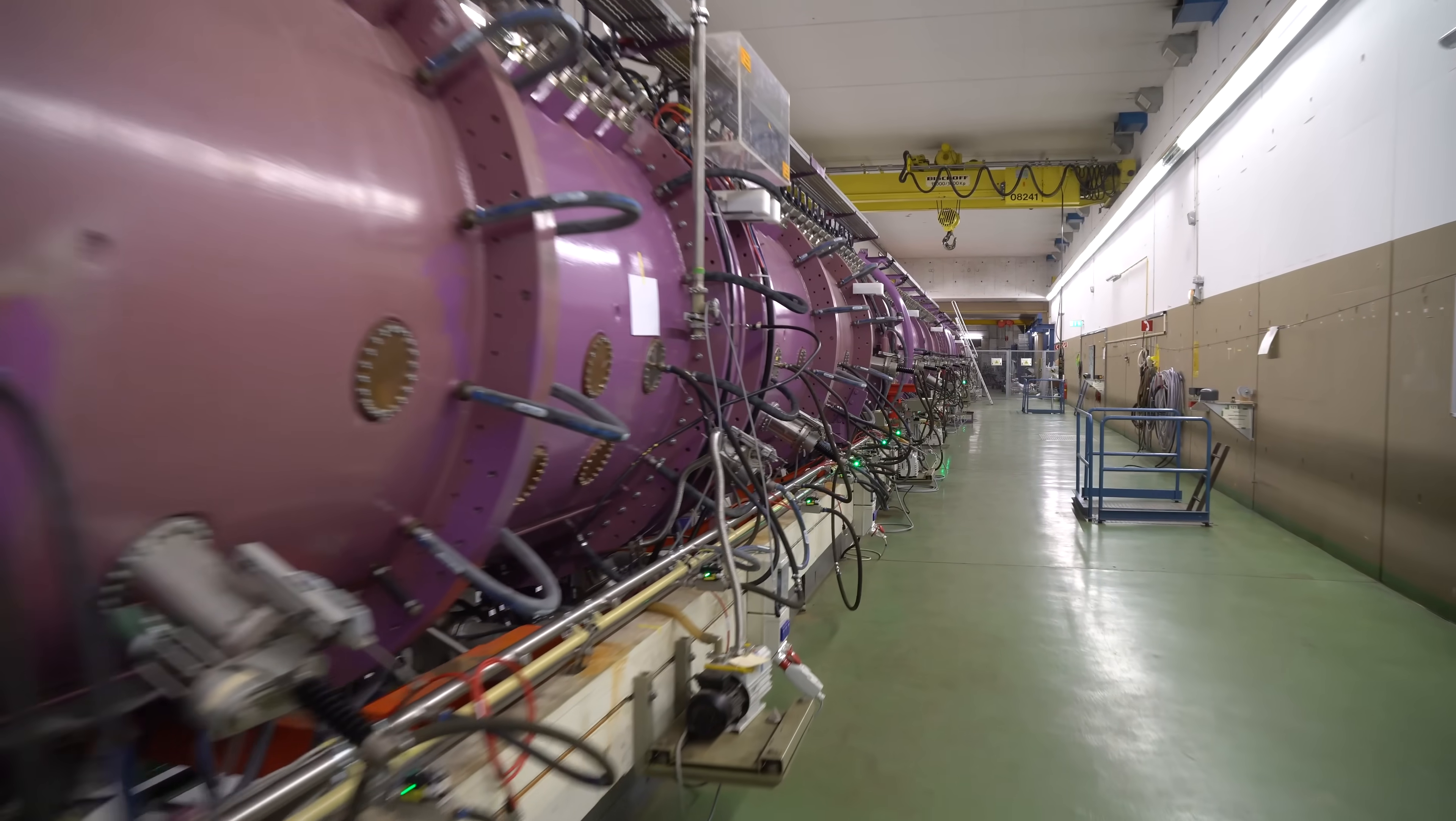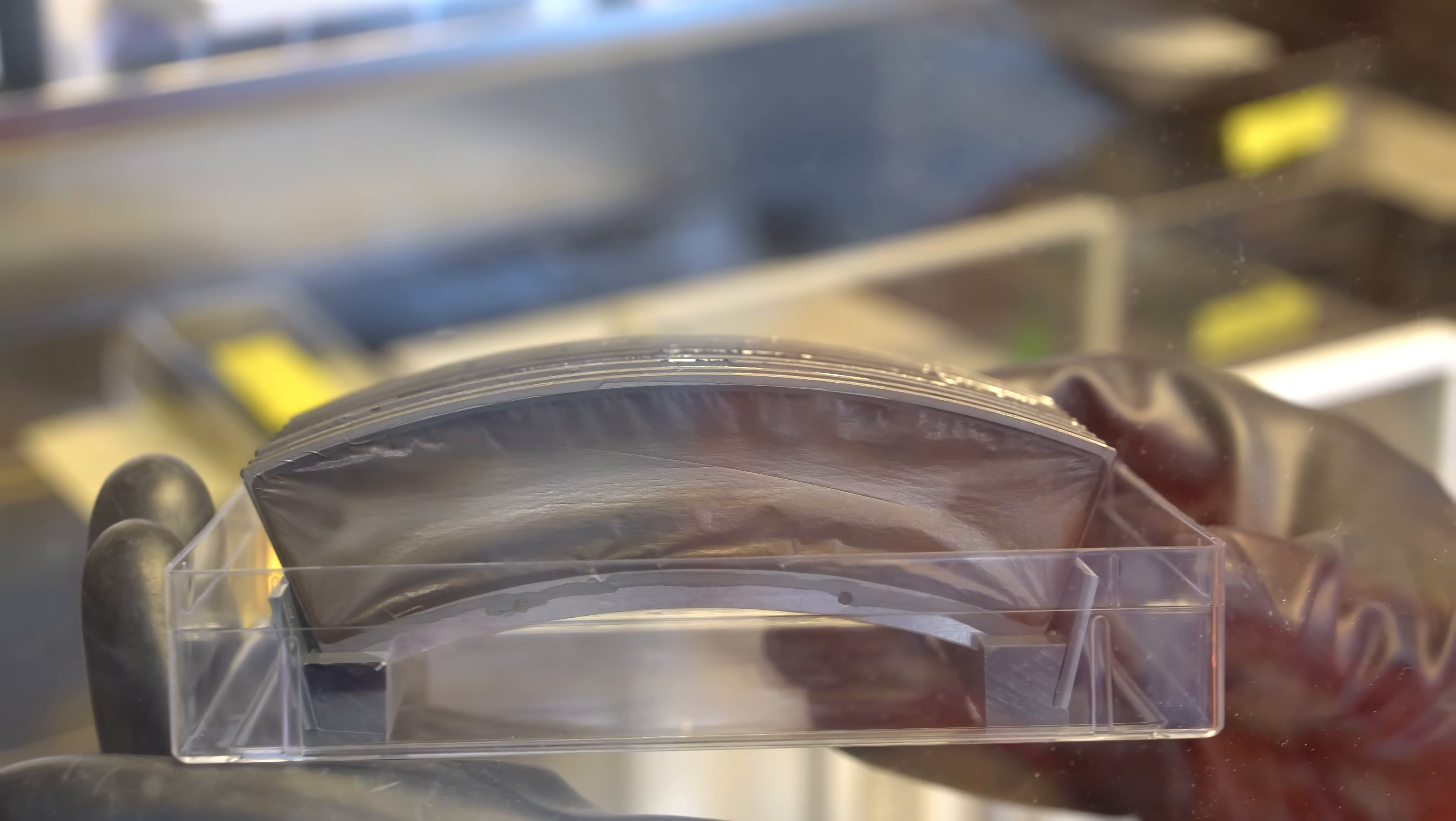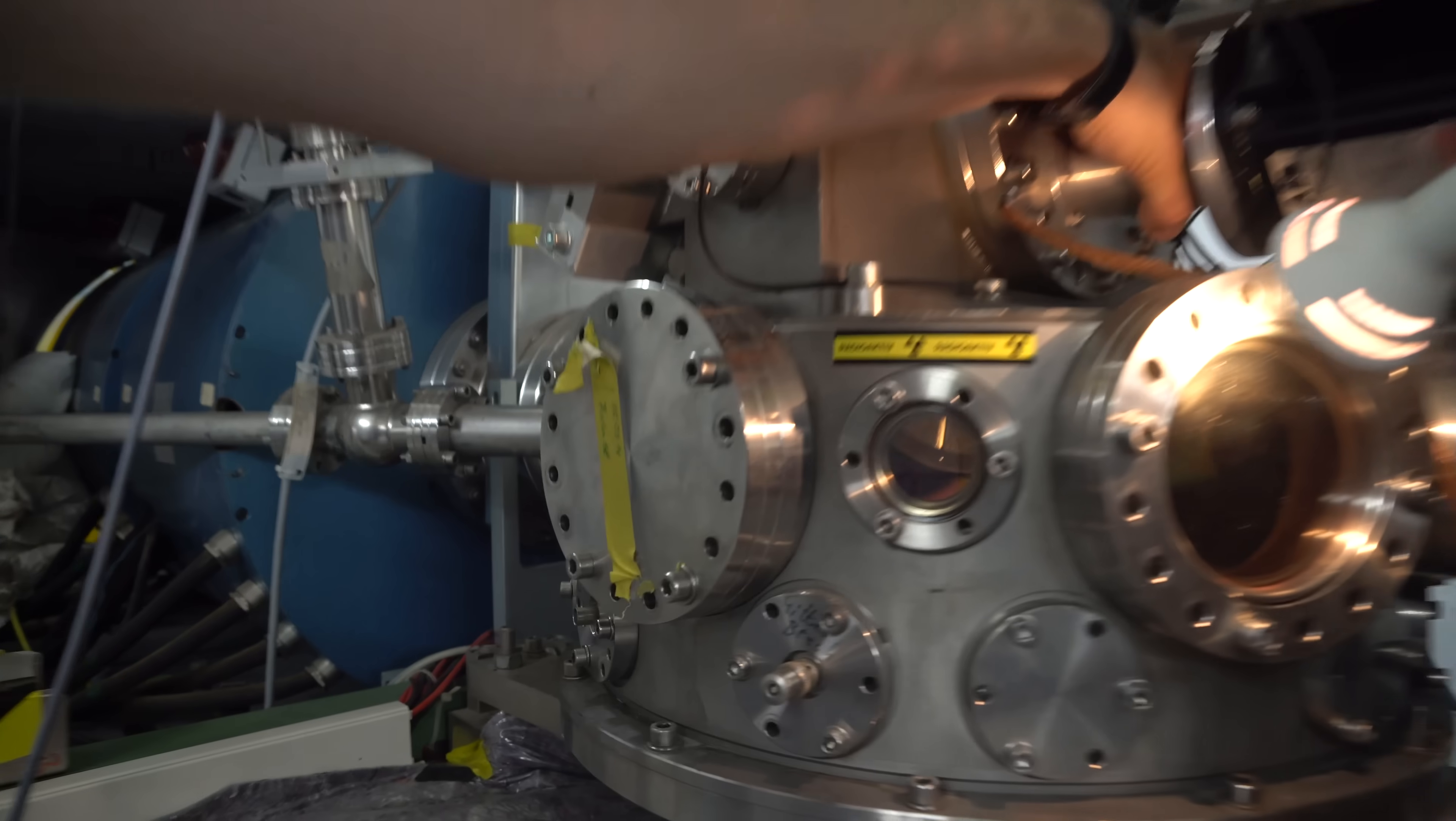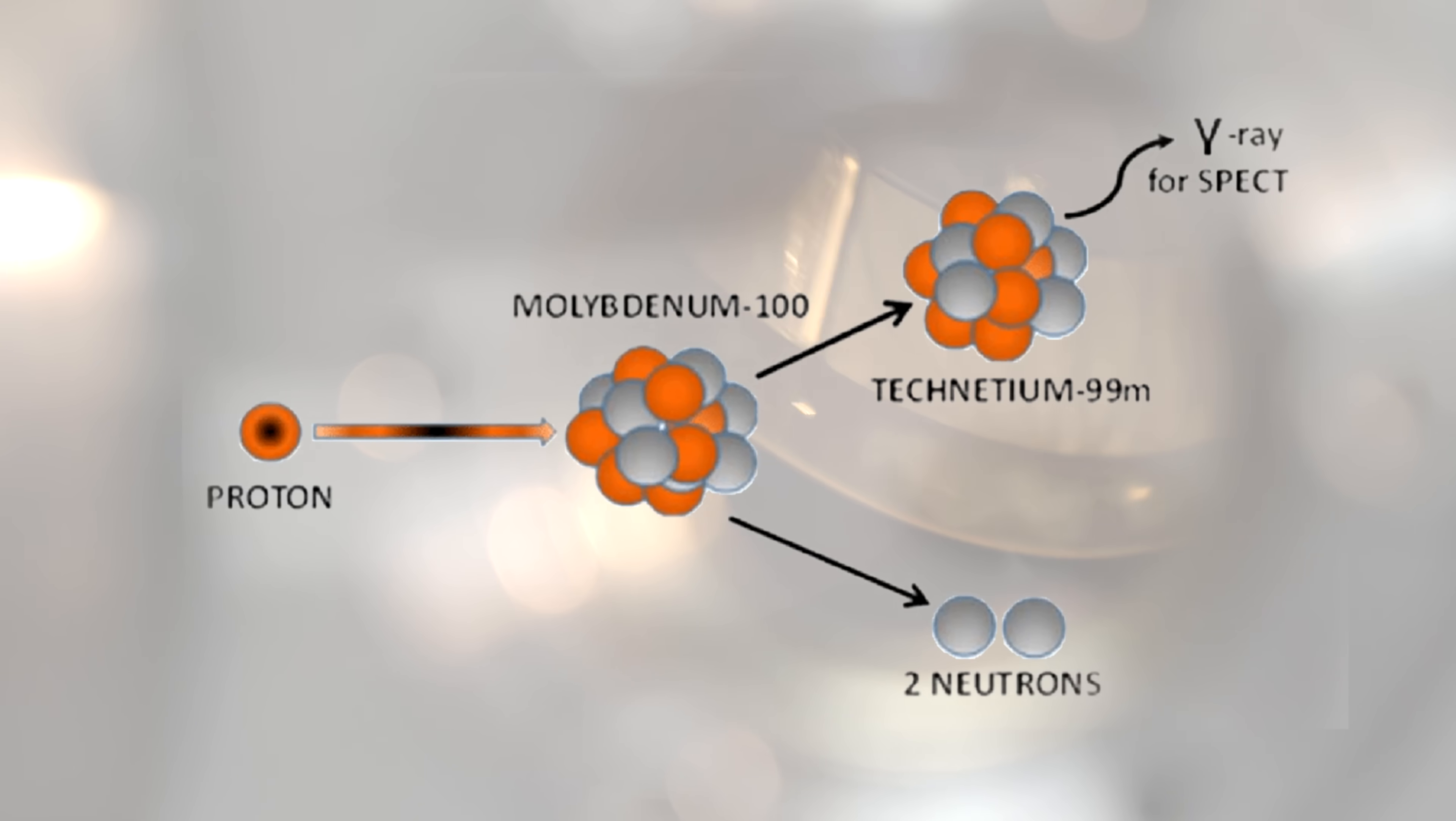Since this metal almost never occurs naturally, how can we obtain it? We can use a particle accelerator, a piece of molybdenum-100 foil, and bombard it with protons accelerated to 10% of the speed of light. During this process, molybdenum core absorbs a proton, and after radiating a neutron, turns into technetium-99.